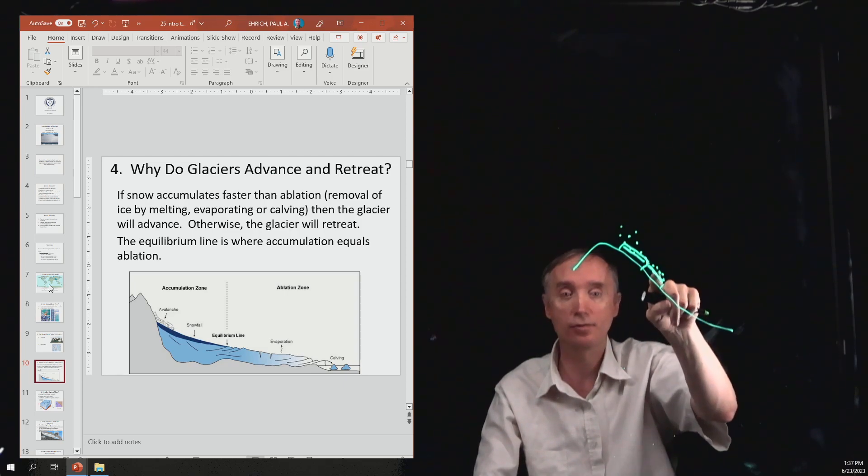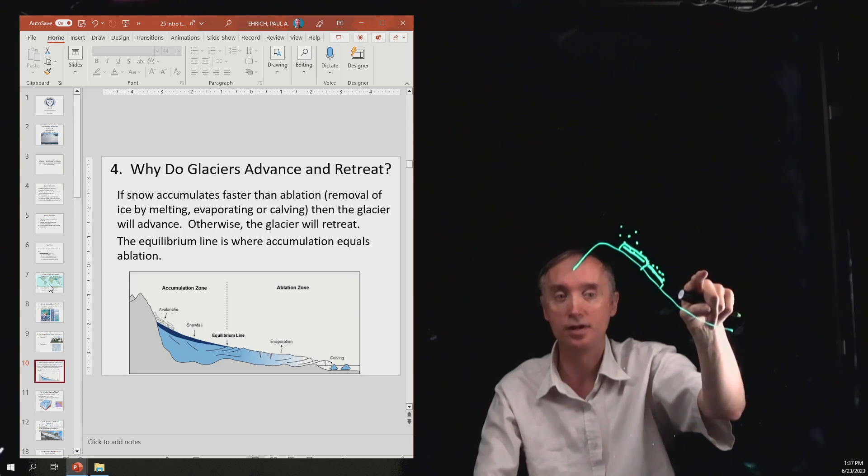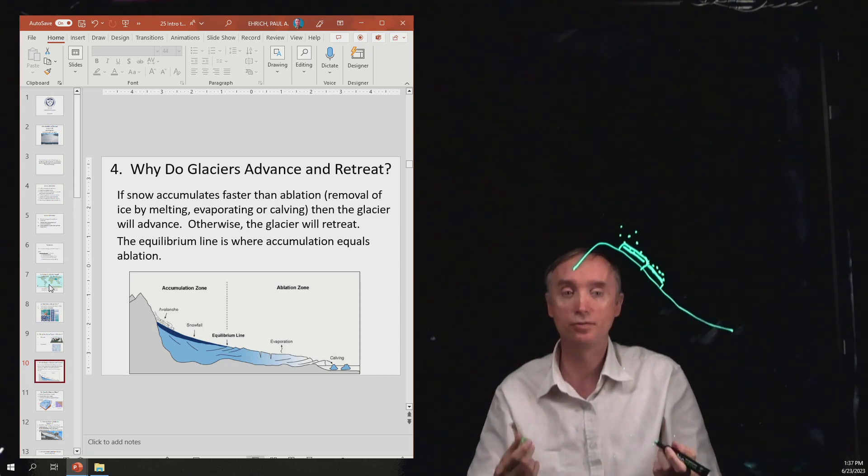So it's changing directly from a solid to a gas. That's one way that a glacier can evaporate, get smaller. Glaciers can also melt.